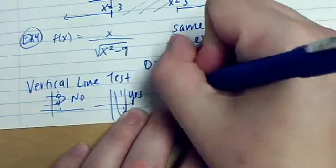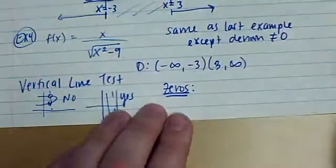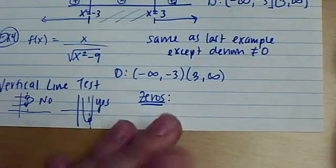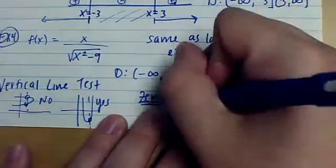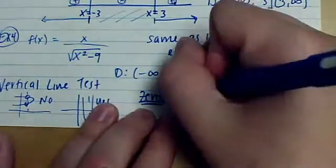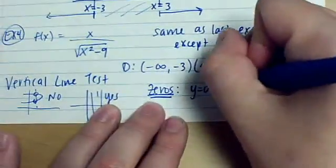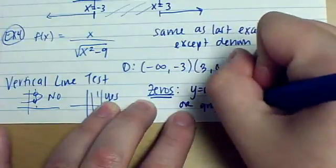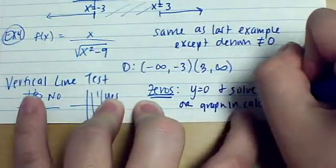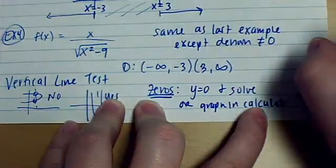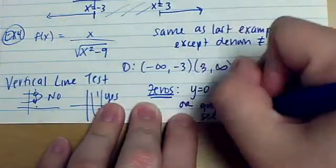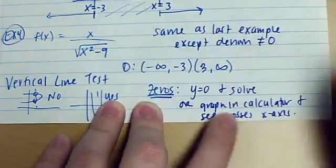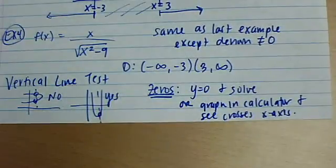And then, your zeros. Those are the same thing as x-intercepts, which we talked about earlier this week and last week. They are on your test. This is where you plug in 0 for y and solve. So, set y equals 0 and solve. Or, you can graph it in your calculator and see where it crosses the x-axis.